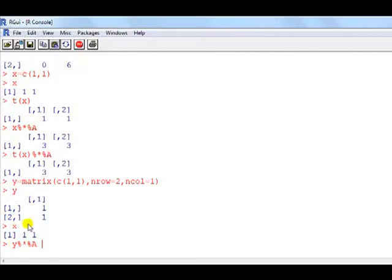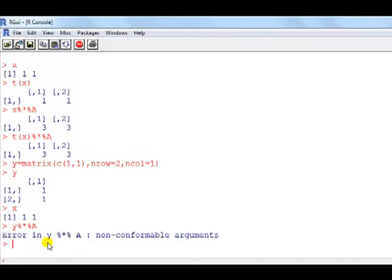Set them up like x so they're conformable. No, you get an error. How about if I look at the transpose of y? It is now conformable - now it's two by one times a two by two.